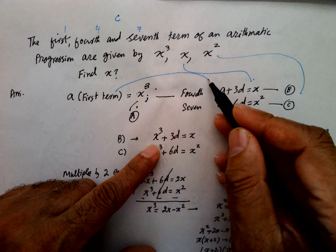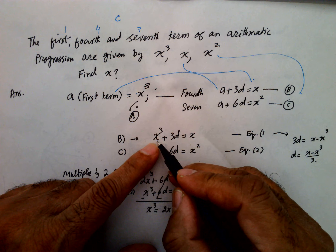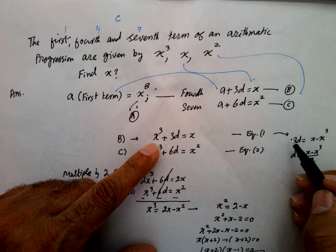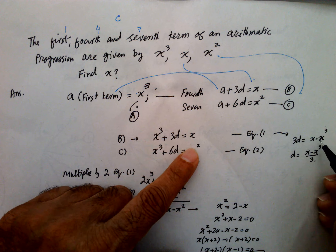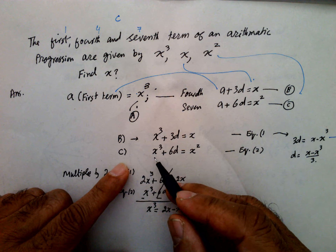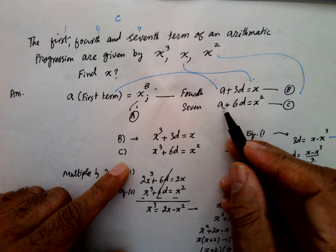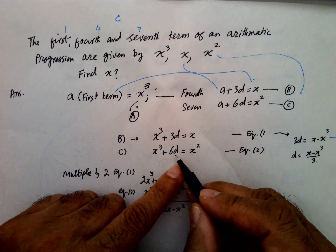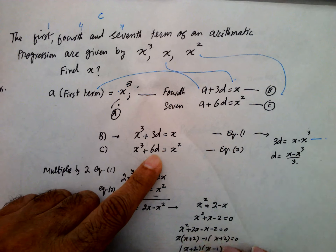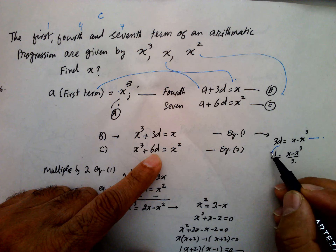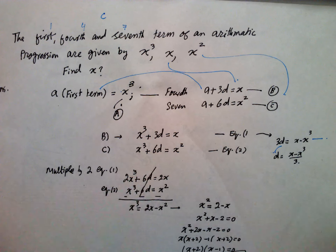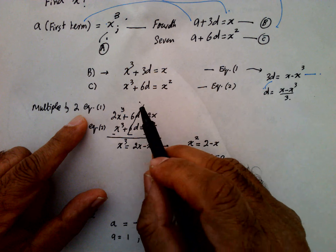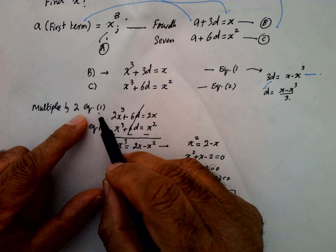A is X cubed. So substituting into the 4th term equation: X cubed plus 3D equals X, which means 3D equals X minus X cubed. From the 7th term equation: X cubed plus 6D equals X squared. From this we can find D. This is equation number 2. Multiplying equation number 2 and equation number 1 to eliminate D.